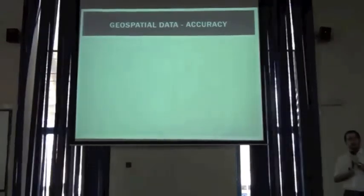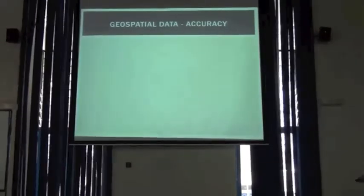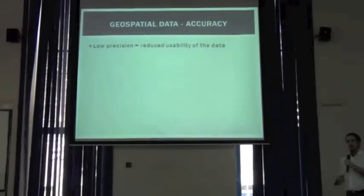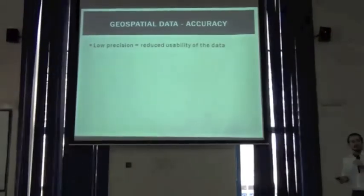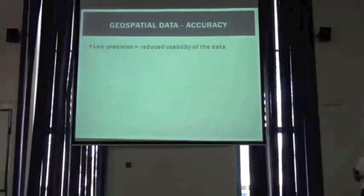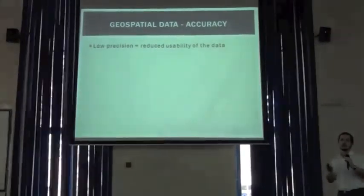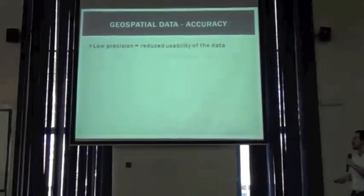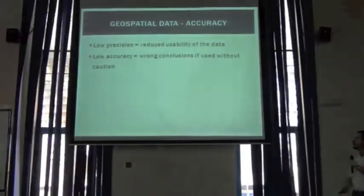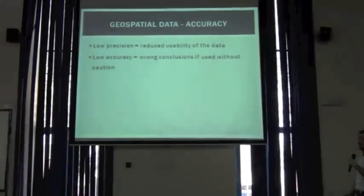So that's what you need to know about geospatial precision. Now, regarding geospatial accuracy: while low precision means information will be less usable or limits its possible uses, low accuracy can actually lead to wrong conclusions if the information is not handled carefully.